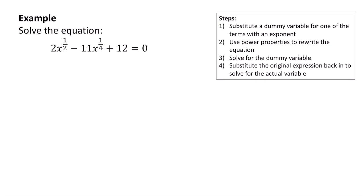Notice that we have two terms that have a rational exponent. We need to figure out some way of combining those terms, but we can't because they're being separated by a subtraction sign. So we're going to introduce a dummy variable. We're going to pick a variable, let's say n, and we're going to say that n equals x to the 1 fourth. This is going to allow us to do some substitution, which will help us solve this problem.